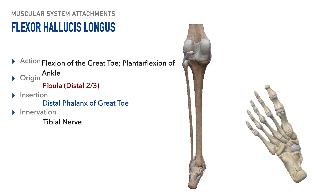Next is the flexor hallucis longus. Its action is flexion of the great toe along with plantar flexion of the ankle. Its origin is on the distal two-thirds of the fibula. Its insertion is the distal phalanx of the great toe, shown on the undersurface of the foot. The innervation of the flexor hallucis longus is the tibial nerve.